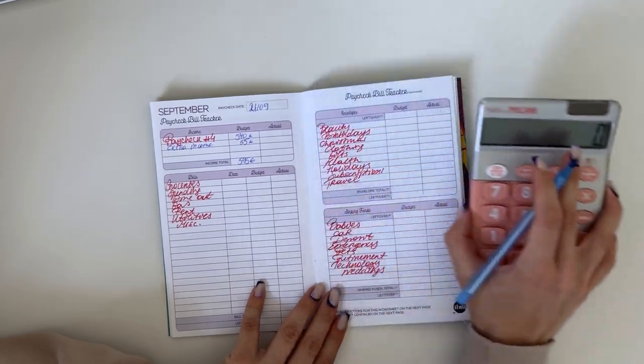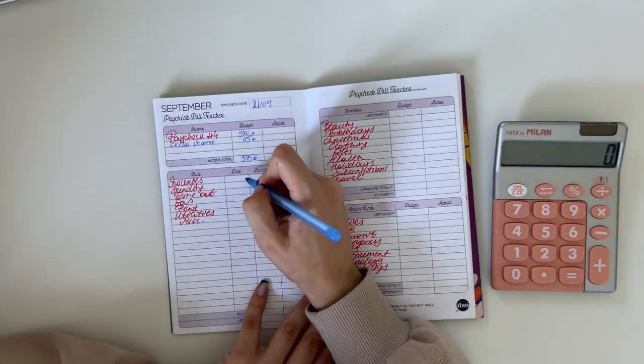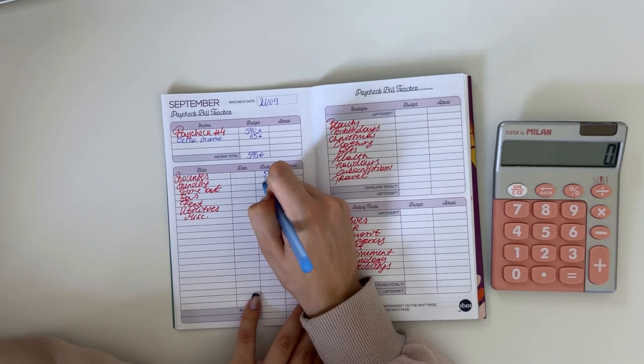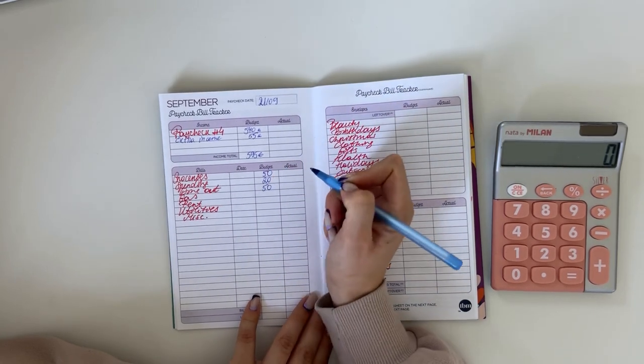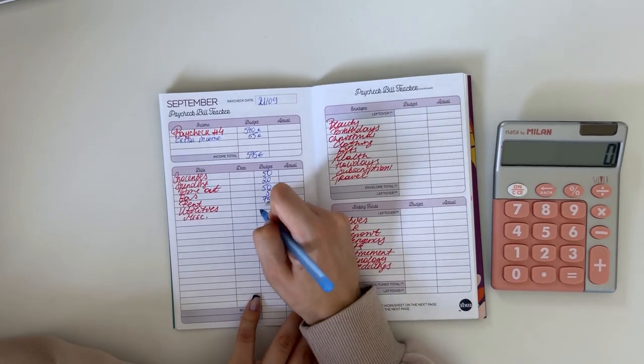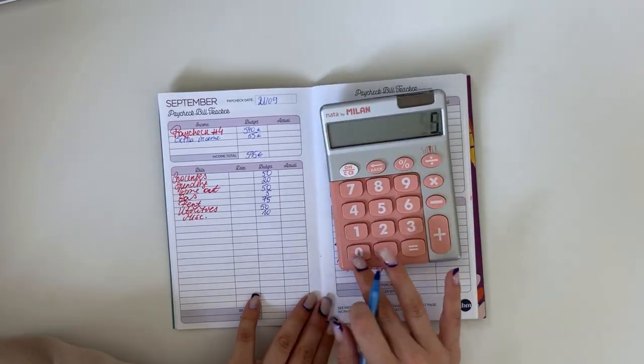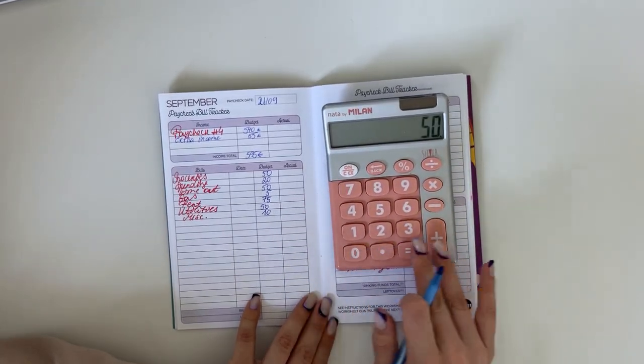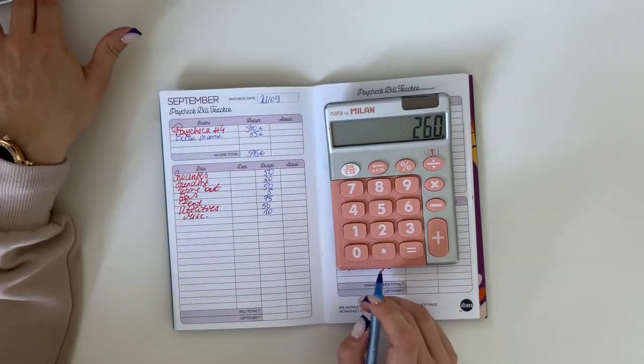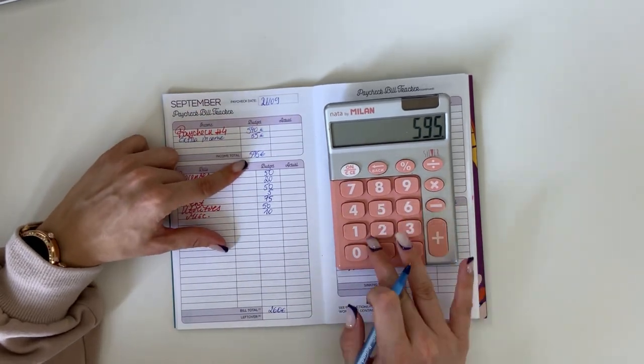595 to work with. We're going to put 50 into groceries, 20 into spending, and 50 in dine out. We're going to put 5 into gas, 75 into rent, 15 utilities, and 10 miscellaneous. In bills and cash envelopes we have 260 euros going in there, so 595 minus 260 we have 335 left to budget.